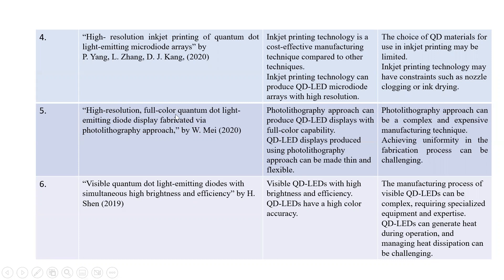The fourth paper is on high resolution full color quantum dot light emitting diode displays fabricated via a photolithography approach. The pros are that this approach can produce QD LED displays with full color capability that can be made thin and flexible. The cons are that photolithography can be a complex and expensive manufacturing technique and achieving uniformity in the fabrication process can be challenging.